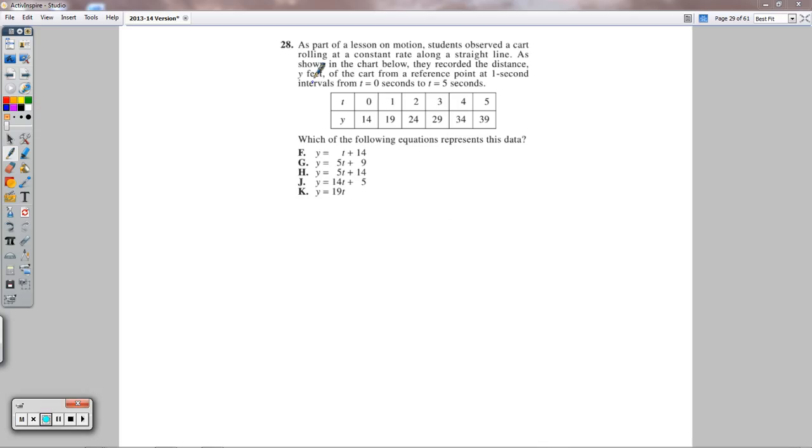Welcome to question 28. It says, as part of the lesson on motion, students observed a cart rolling at a constant rate along a straight line. As shown in the chart below, they recorded the distance y feet of the cart from a reference point at one second intervals from t equals zero seconds to t equals five seconds. You can see the data there in the table. Which of the following equations represents this data? So it looks like t,